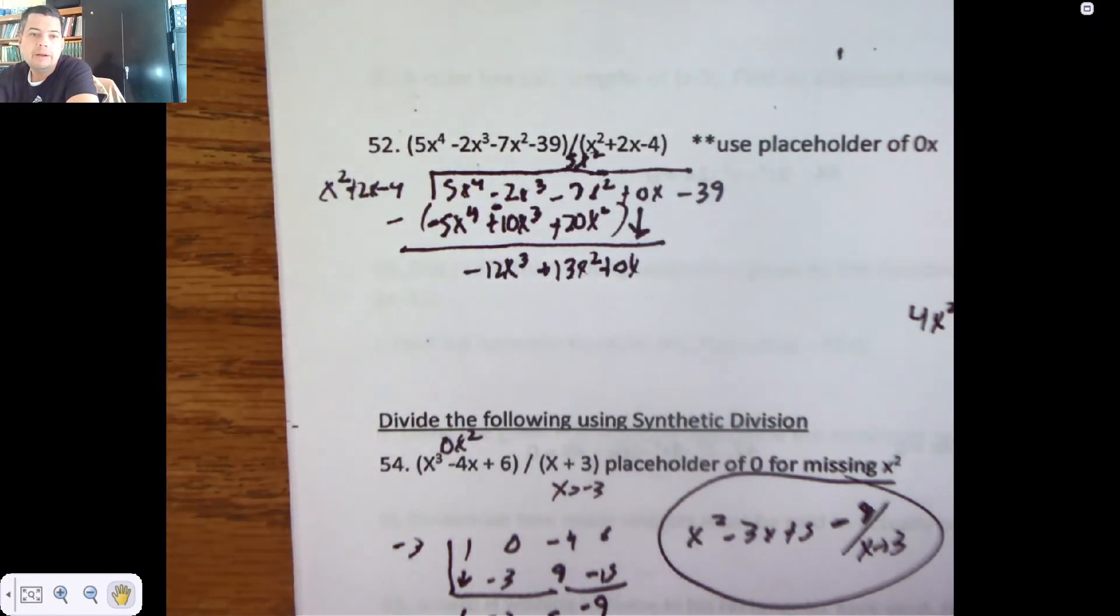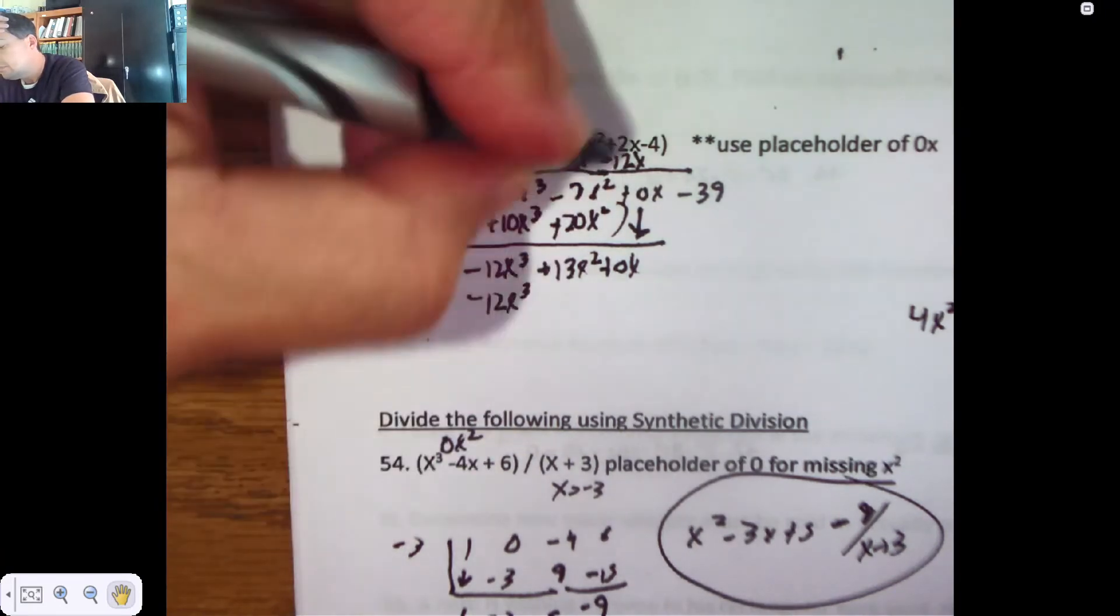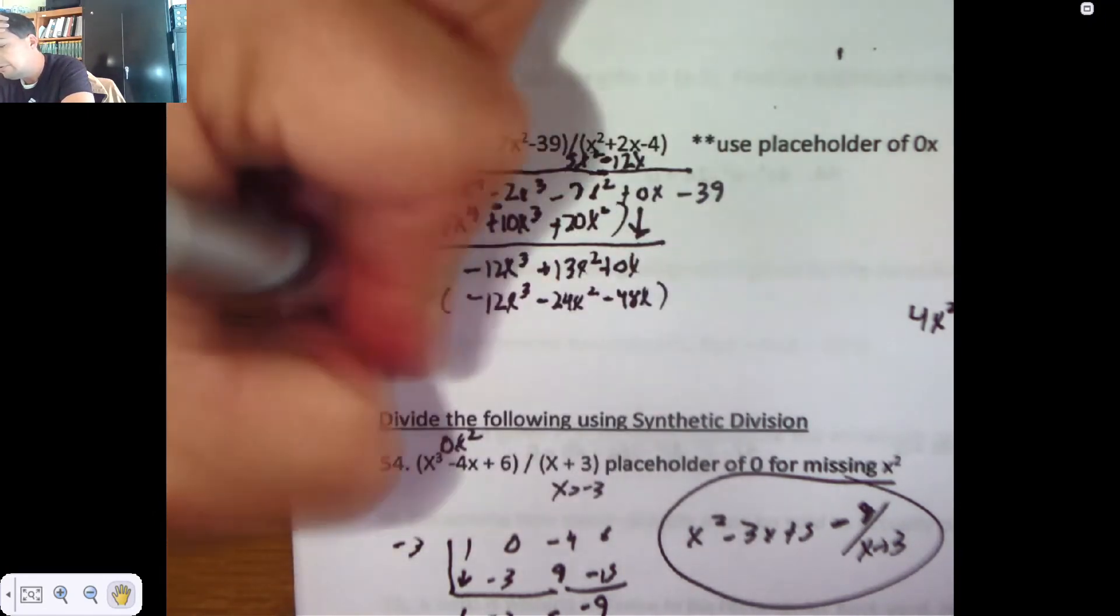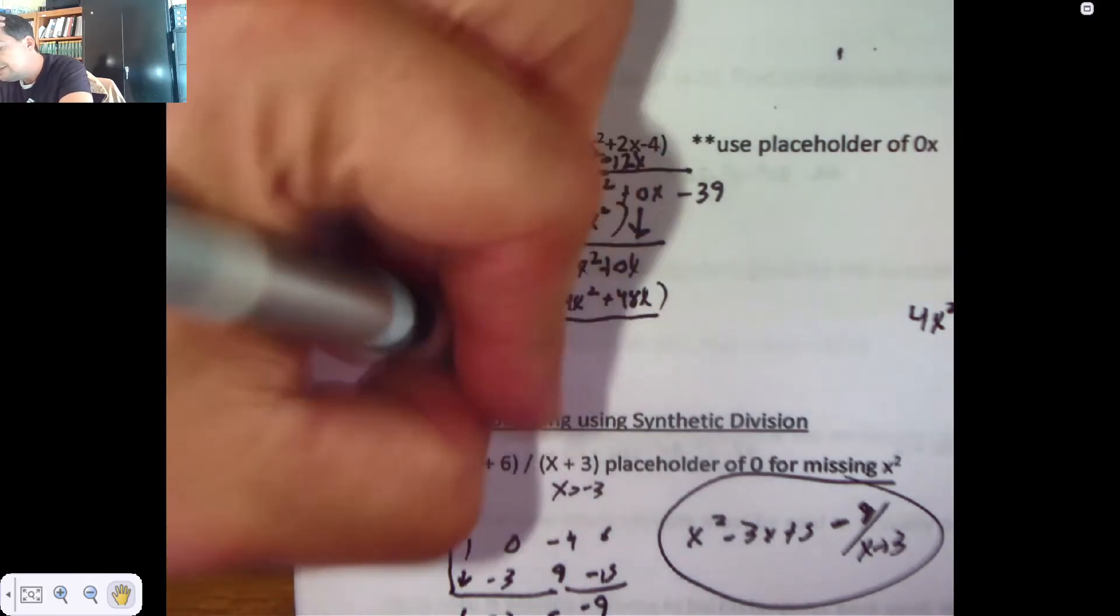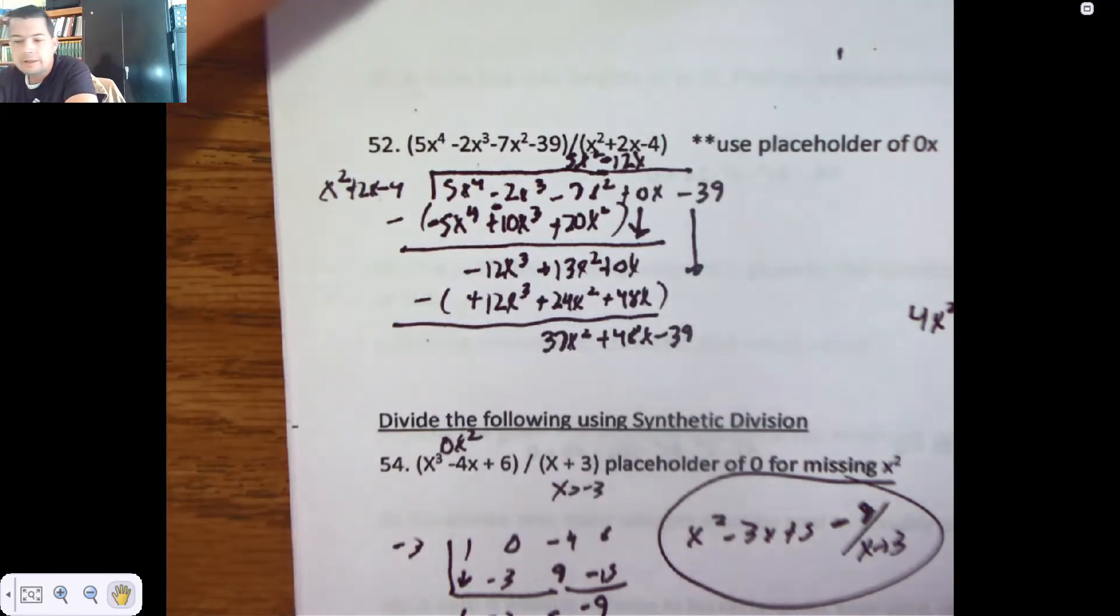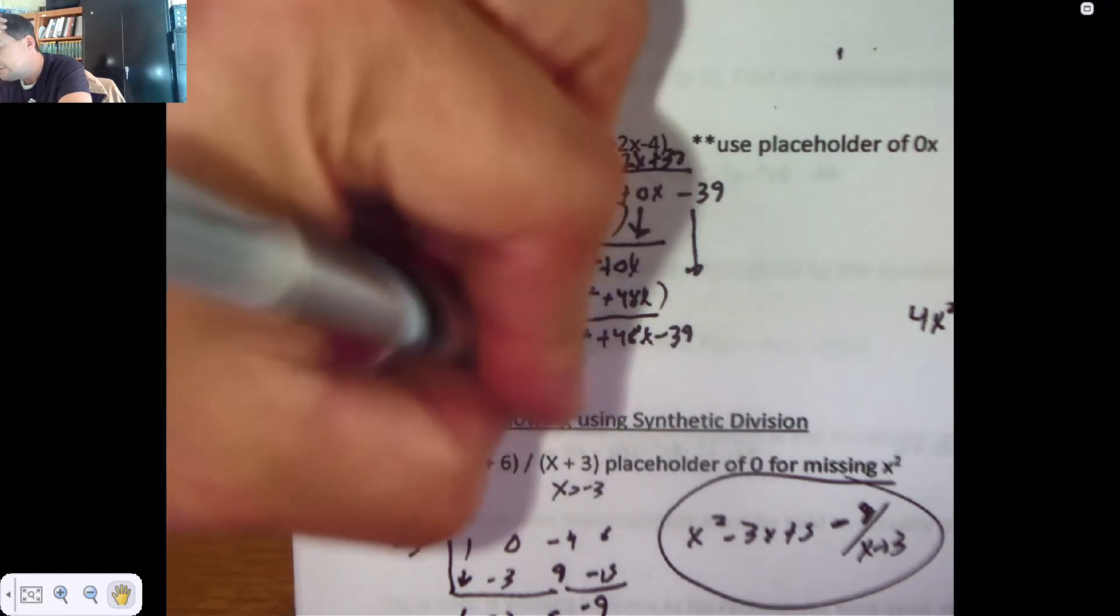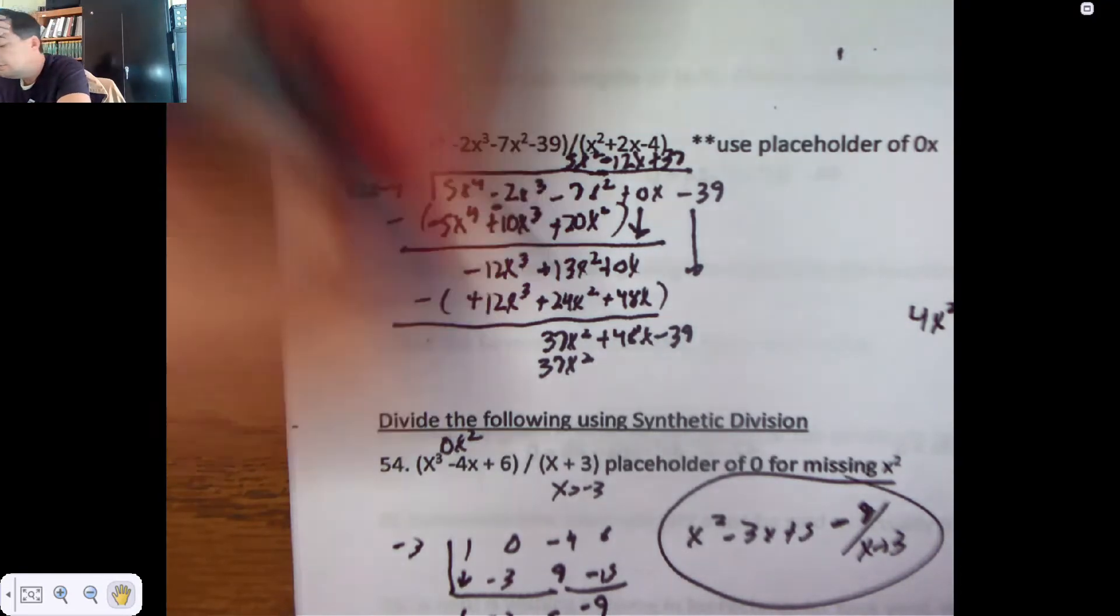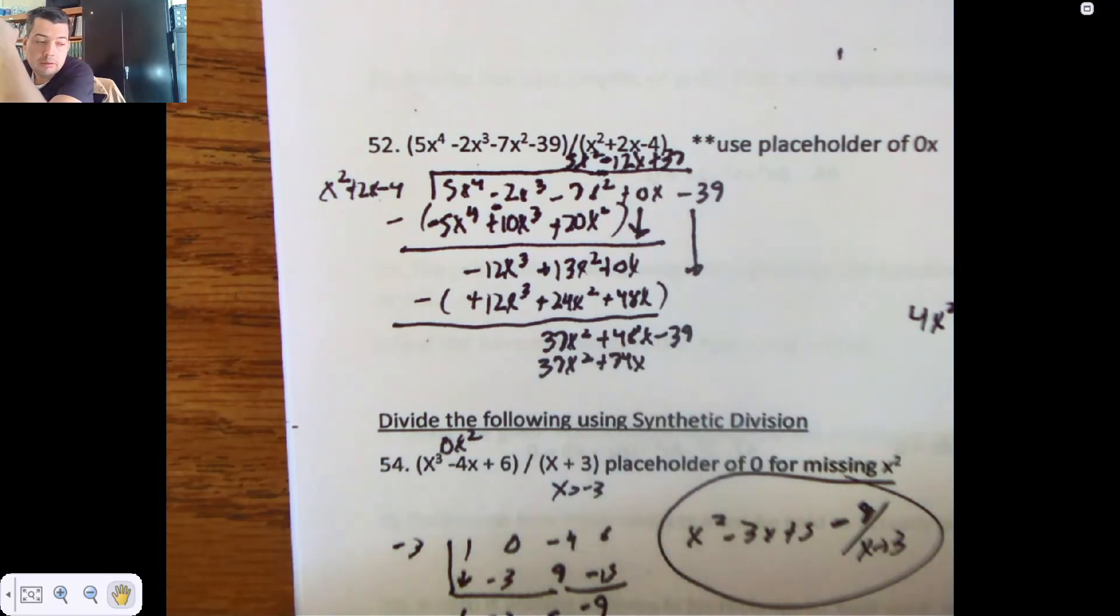Now, I need to multiply by negative 12x to become negative 12x cubed. It will be minus 24x squared minus 48x. Again, I'll wrap before I subtract. I'm going to change all those to positive. There will be no x cubed. It looks like there's going to be 37x squareds and 48xs. I'll bring down that negative 39. This should be my last one. To turn an x squared into 37x squared, I'll multiply by 37. I'll give you 37x squared plus 74x. And then on this one, negative 148. I believe that's right.